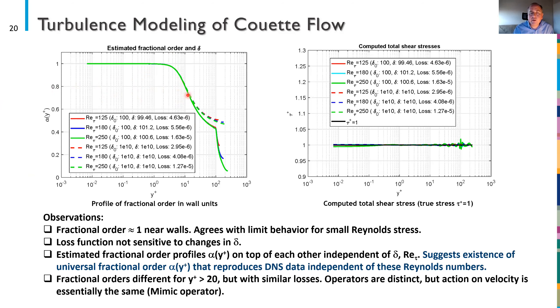We also observed that near the wall the estimated fractional order is almost one. This agrees with the limit behavior that the Reynolds stress is negligible in the viscous sublayer. As we move towards the center line the turbulence effect is identified that is the Reynolds stress dominates and the decreasing fractional order shows more dominant non-local effects. In the rightmost figure we compare the computed total shear stress against the true stress of one and we see that nPINNs accurately recovers the expected value.